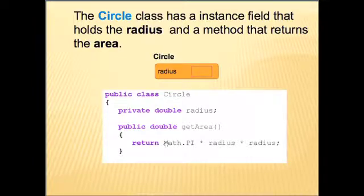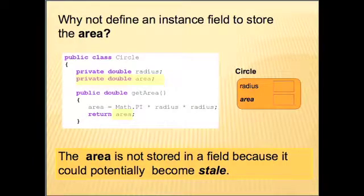In this case, we have a method that calculates the area every time it's called, getArea, and returns the value. So why not define an instance field to store the area? Well, the problem is, the area is not stored in a field because it could potentially become stale. Area is dependent on the value of radius.